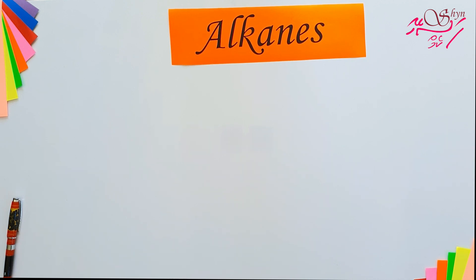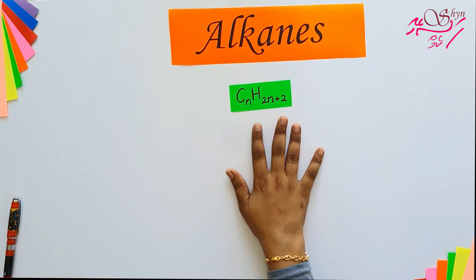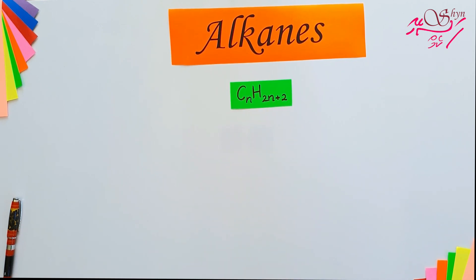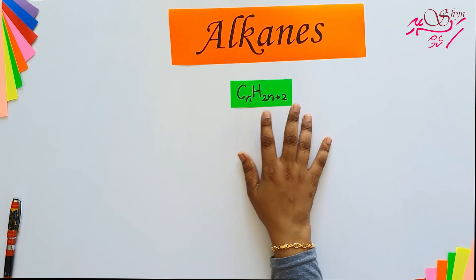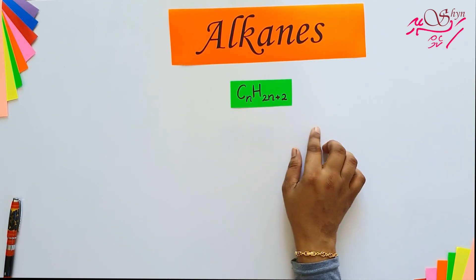As presented in the previous video, all the homologous series have the same general formula, and the general formula of alkane is CₙH₂ₙ₊₂.